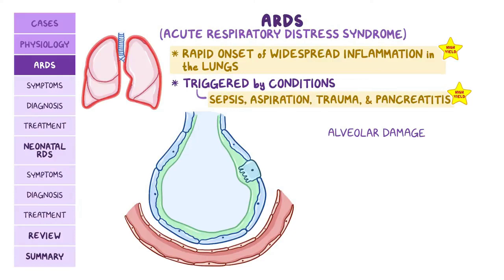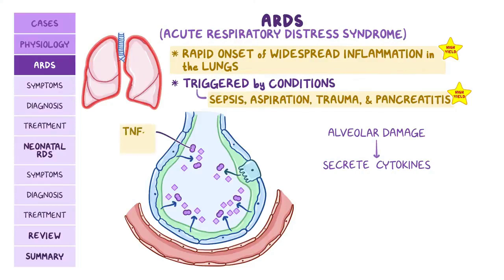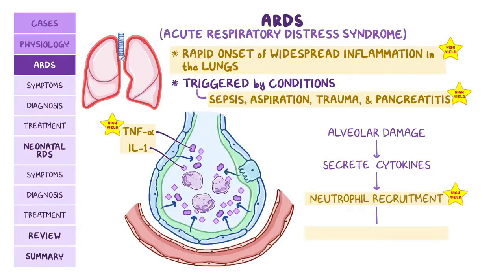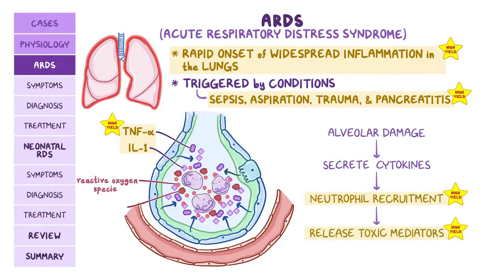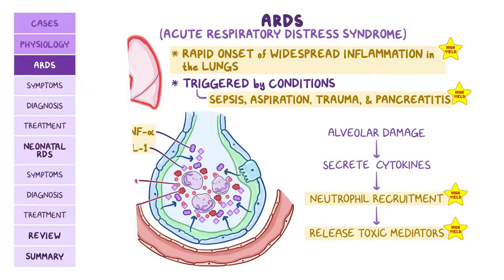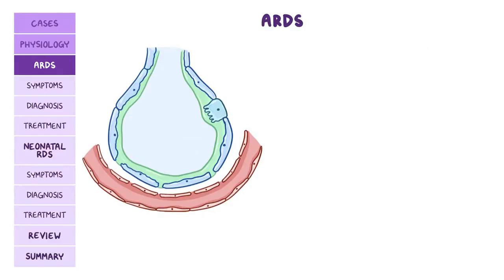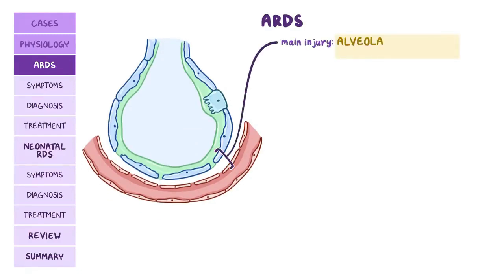ARDS starts when these conditions cause alveolar damage. A high-yield fact is that the injury triggers the pneumocytes to secrete inflammatory cytokines like TNF-alpha and interleukin-1. This subsequently leads to neutrophil recruitment, and they will release toxic mediators like reactive oxygen species and proteases, which will damage the lungs even more.